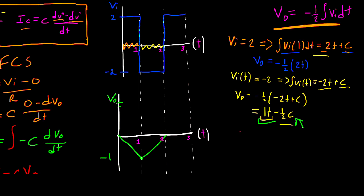Now for our last interval, we have VI is equal to 2 again. So that means the integral of VI of T dt is equal to 2T plus C. And we can plug this into our VO equation and we'll have that VO is equal to negative 1 over 2 multiplied by 2T plus C. And this gives us VO is equal to negative 1T minus 1 over 2C.